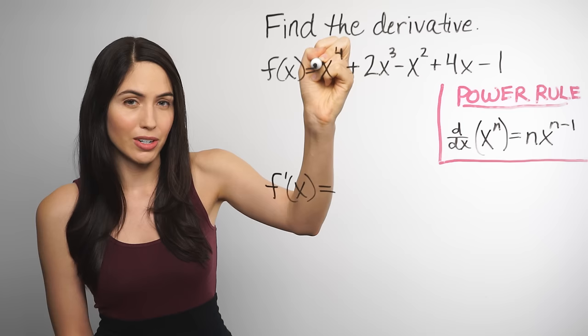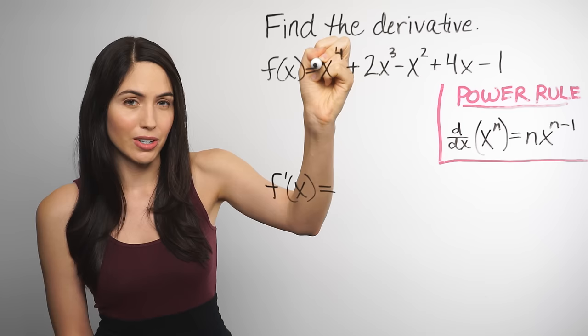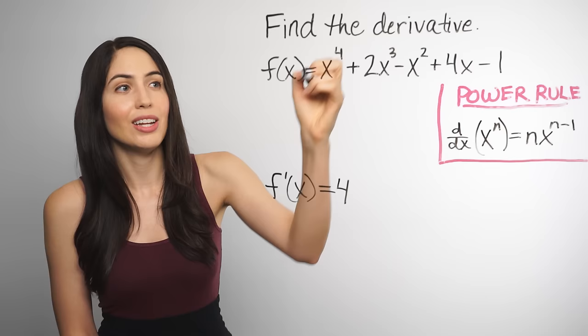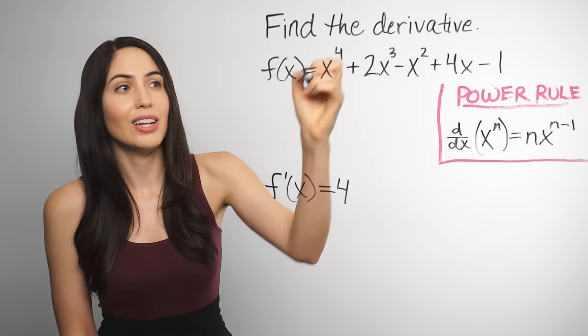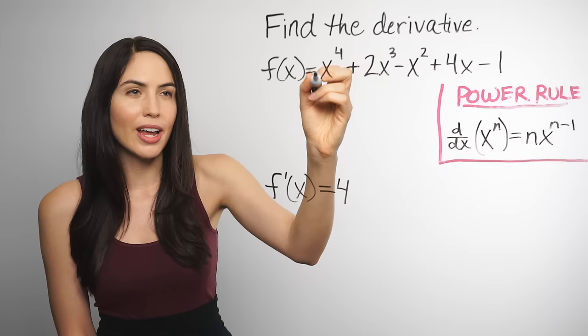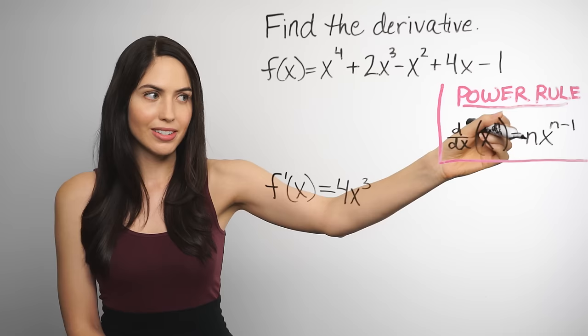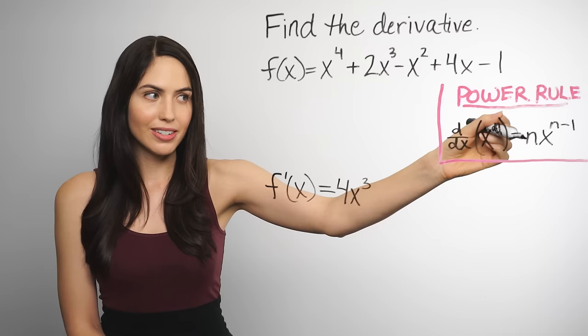All you have to do is bring that power down to the front of the term as a coefficient, and then reduce that old power by 1 — decrease the power by 1, knock it down by 1. So for this one, we bring down the 4 to the front as a coefficient, and then reduce that power by 1, so instead of x to the fourth, we have x to the third. That's all you have to do for that term. This is the power rule: to take the derivative of a power of x, you bring down the power out front as a coefficient and then reduce the power by 1. This is for positive integer powers.